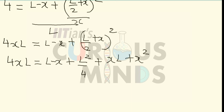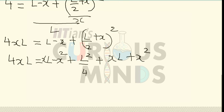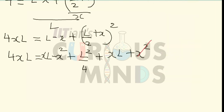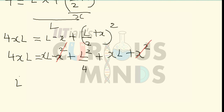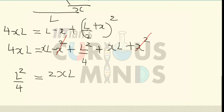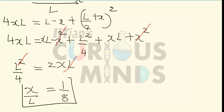After cross-multiplying and simplifying, the X² terms cancel out — plus X² minus X² equals zero. What remains is L²/4 equals 2XL. Cancelling one factor of L from both sides gives X/L equals 1/8.